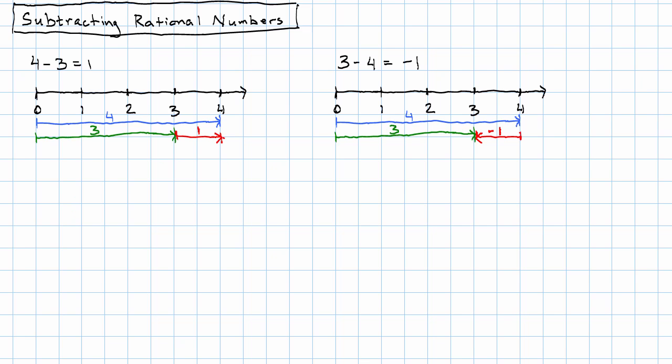Let's say the signs were different. Let's say we have 4 minus negative 3 or negative 3 minus 4. Now I'm going to draw these number lines a little bit smaller so they fit on the screen.